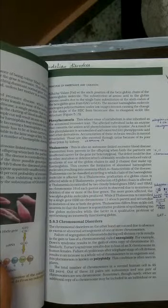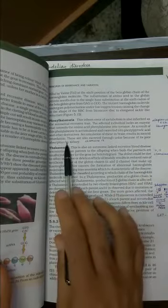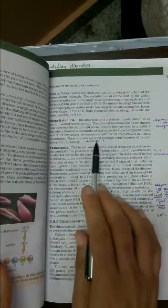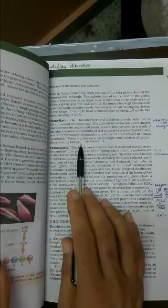The next one to study is phenylketonuria. It is an inborn error of metabolism, also inherited as autosomal recessive trait. The affected individual lacks the enzyme that converts the amino acid phenylalanine into tyrosine. As a result, phenylalanine accumulates and is converted into phenylpyruvic acid and other derivatives. Accumulation of these in the brain causes mental retardation and it is also excreted through the urine because of its poor reabsorption by the kidney.